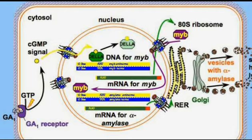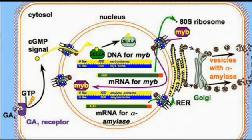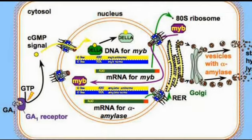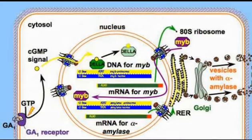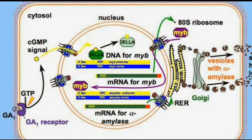Gibberellic acid 1 may also enter directly and bind to an alternate receptor protein located mainly in the nucleus. The activated F-box protein binds with a DELA domain, shown in green color, inside the nucleus. This is the DELA domain.